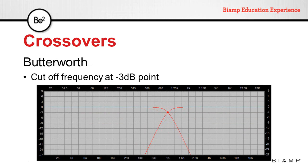Butterworth filters have a cutoff frequency at the minus 3 dB point. So when we sum them together, we'll get a 3 dB boost at the cutoff frequency.